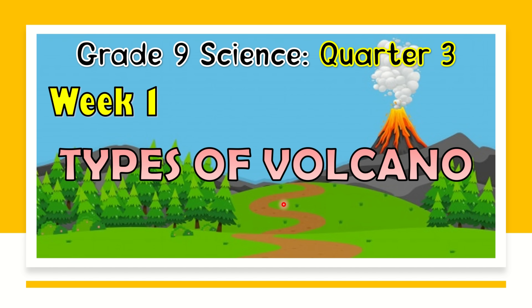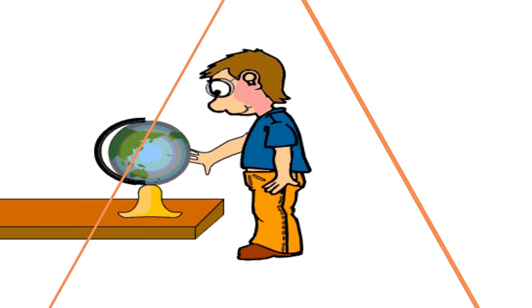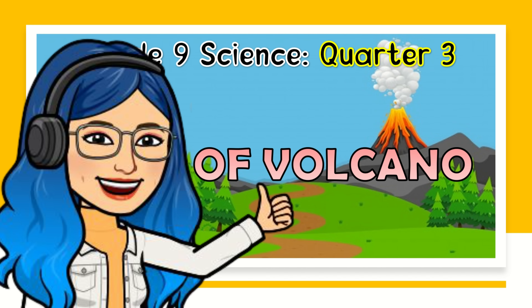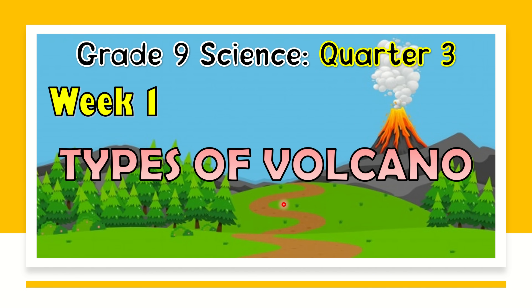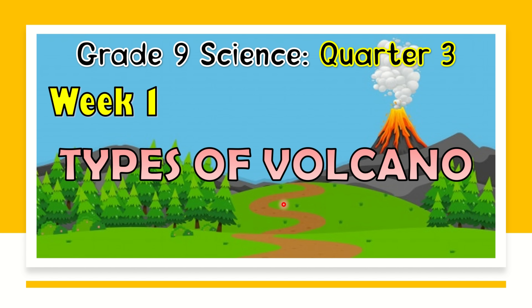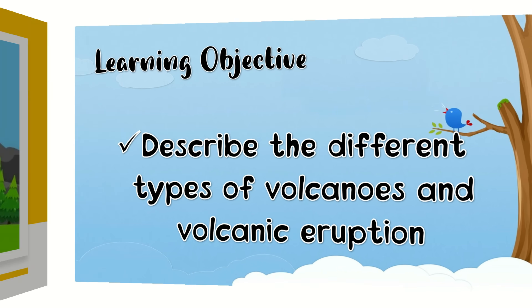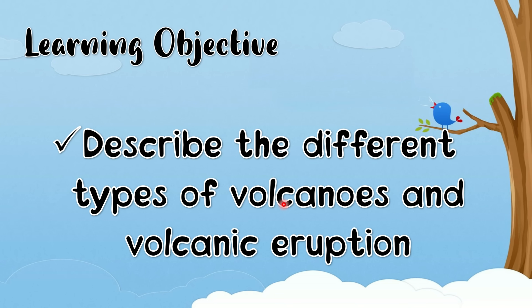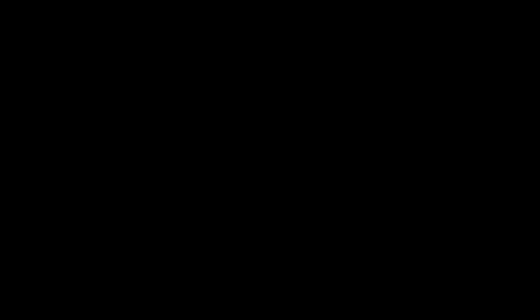We are now in Quarter 3, which is about Earth Science. Good job, class, for making it here. Our first lesson for this quarter is about the different types of volcano. This is our learning objective: describe the different types of volcanoes and volcanic eruption. So listen carefully and keep on watching!